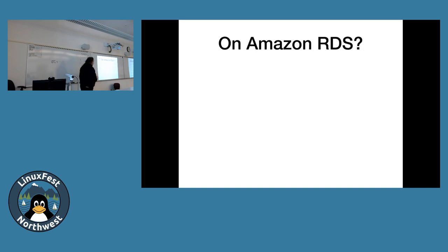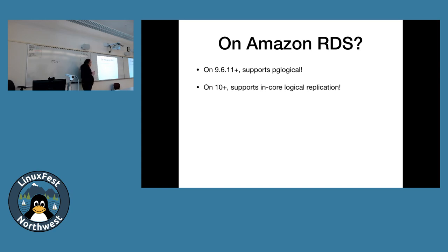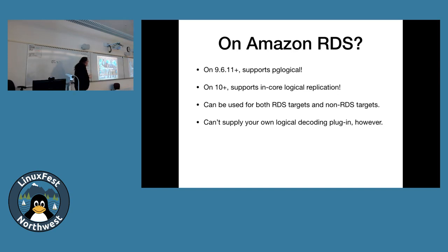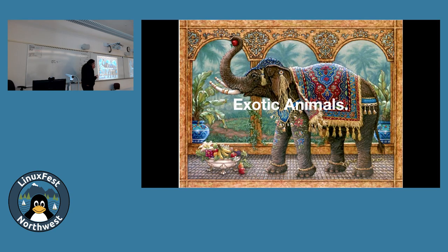On RDS: if you're on version 9.6 or 11 or higher (not 10), you get pg_logical. On version 10 you get in-core replication, unless you're on Aurora which doesn't support it yet. You can use logical replication with both RDS and non-RDS targets, which is a huge advantage. You can't supply your own logical decoding plugin on RDS though.